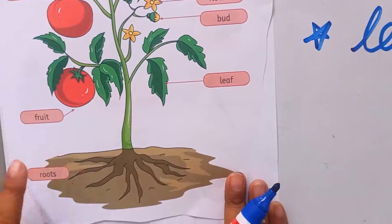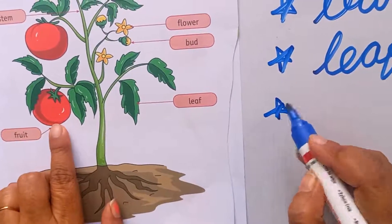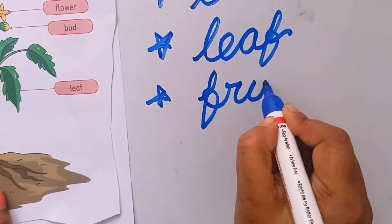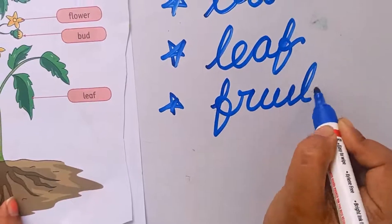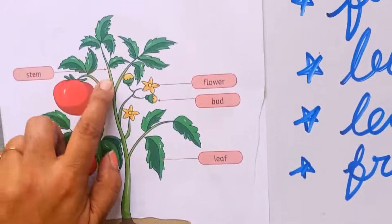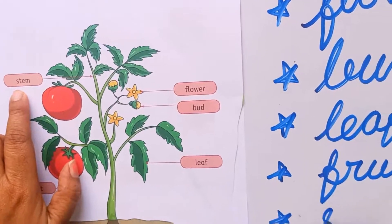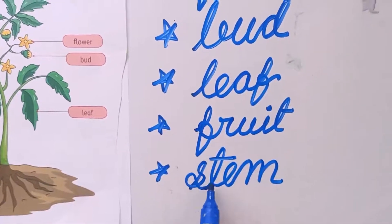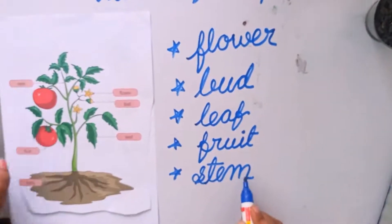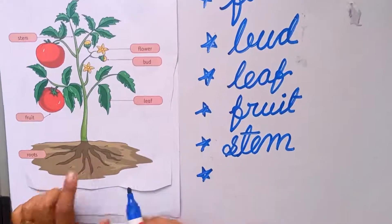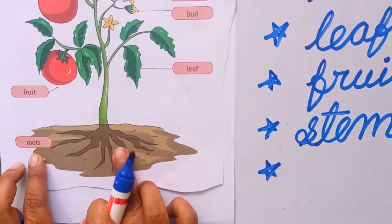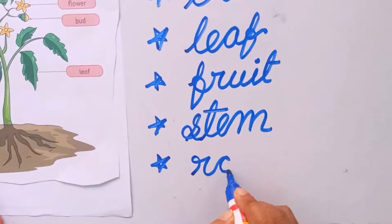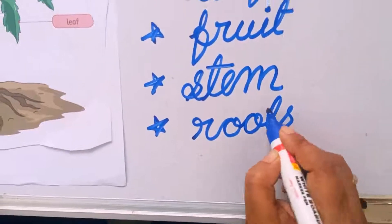Next one — fruit. This is the fruit, tomato. F-R-U-I-T. Next one is stem — this part is called stem. S-T-E-M. Now another part — what is this? Roots. R-O-O-T-S.